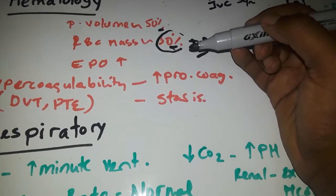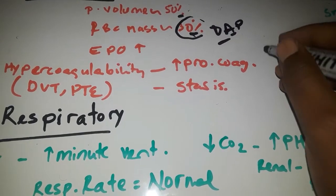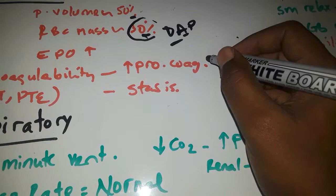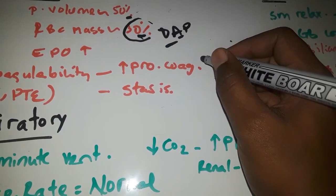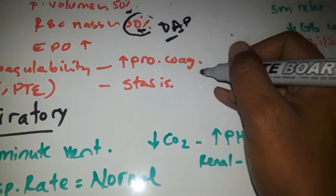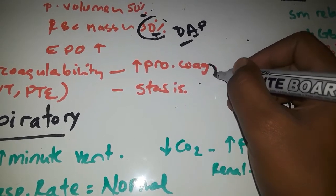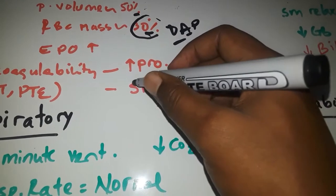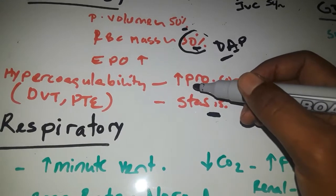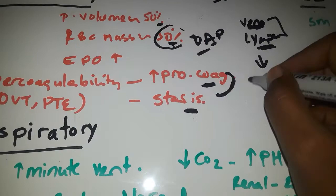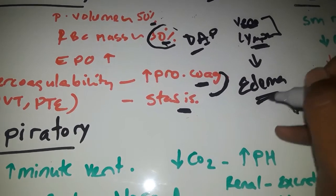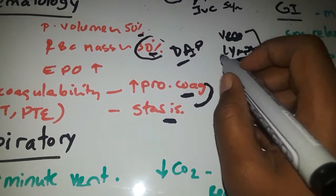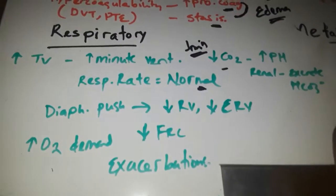Hematologically, pregnancy is a hypercoagulable state. Estrogen stimulates the production of procoagulant factors like fibrinogen and other coagulation factors like factor 7 and factor 8. The enlarged uterus can compress nearby vessels, causing blood stasis. This hypercoagulability means pregnant women are at risk of developing DVT and PE. Edema is a very common finding because of obstruction of venous and lymphatic drainage.